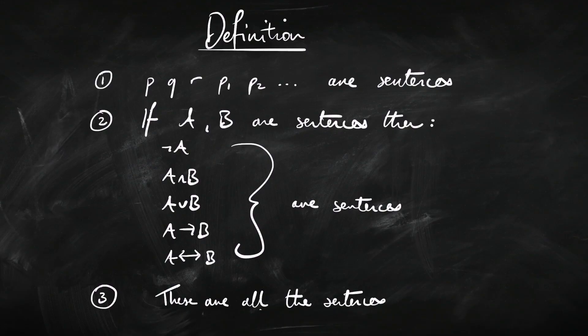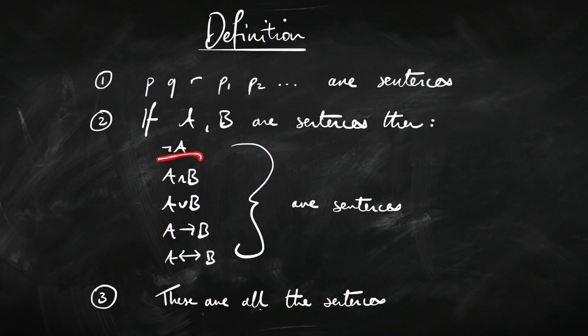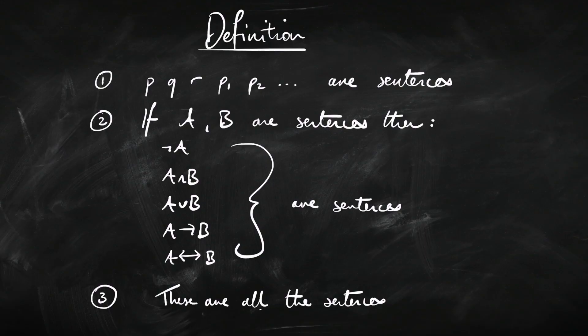Here's the official definition of what counts as a sentence of propositional logic. First, all sentence letters are sentences on their own — P is a sentence, Q is a sentence. Second, if A and B are already sentences, then so are: not-A, A-and-B, A-or-B, if-A-then-B, and A-if-and-only-if-B. Third — and this is the final part — nothing else counts as a sentence. The only way to get a sentence is either it's a sentence letter or it's some combination of sentence letters and connectives put together in the way described.